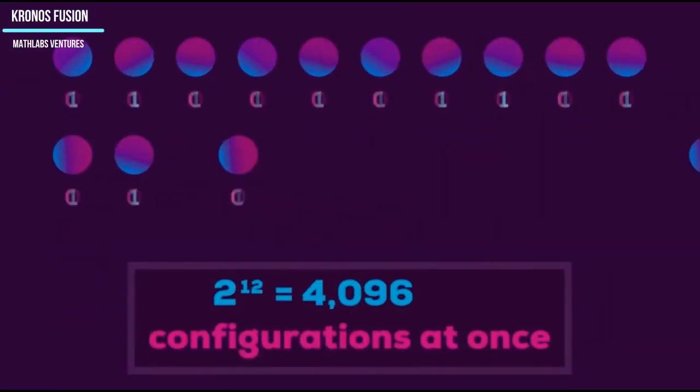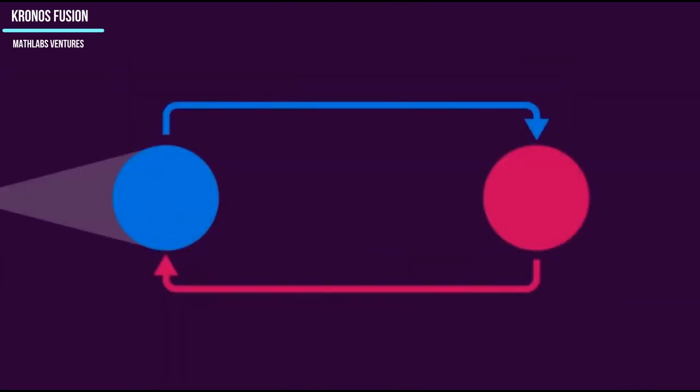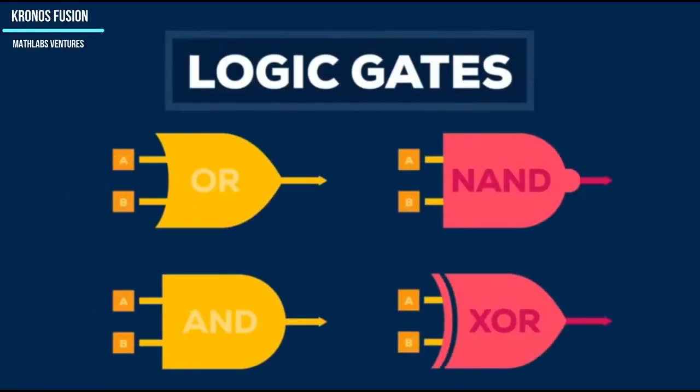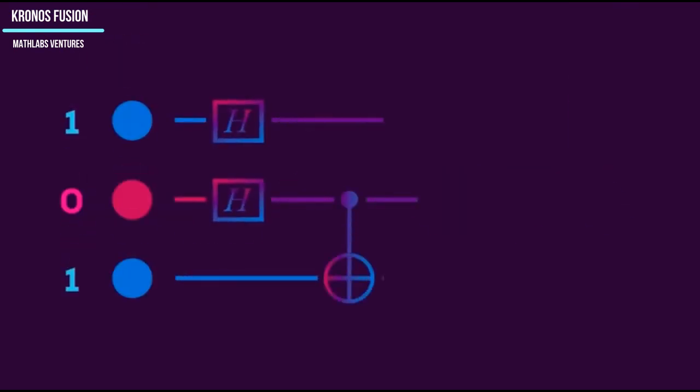Rather than predicting disruptions at the last moment and then mitigating them, we could ideally use future deep learning models to gently steer the plasma away from regions of instability with the goal of avoiding most disruptions in the first place.